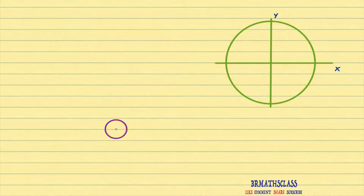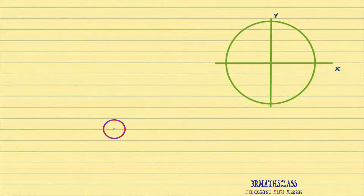We will learn why sin(90° - θ) is cos θ, why cos(90° - θ) is sin θ, and why tan(90° - θ) is cot θ. All these proofs we are going to learn in this class.